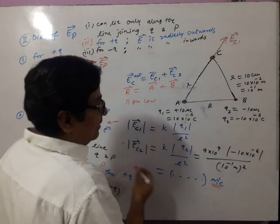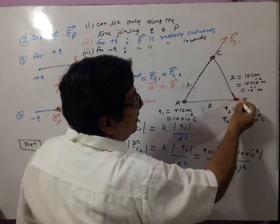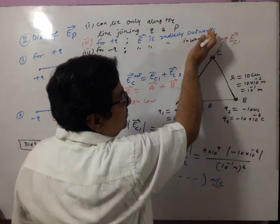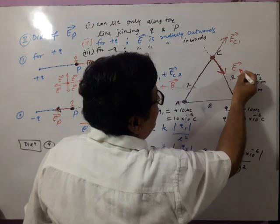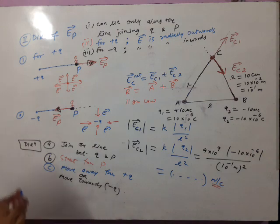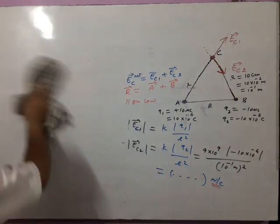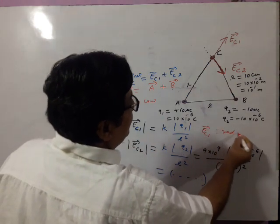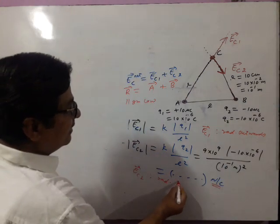For EC2 vector, it is a negative charge, so it is radially inwards. Join the line between charge and the point, start from point, and since it is negative, move towards negative charge. This is the direction of electric field intensity at C because of the second, negative charge. EC1 vector is radially outward and EC2 vector is radially inward.